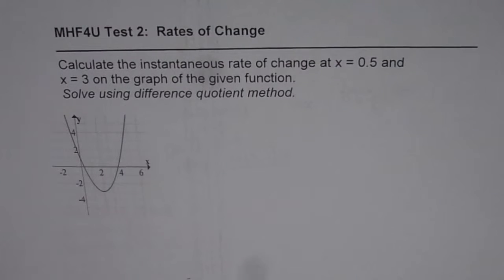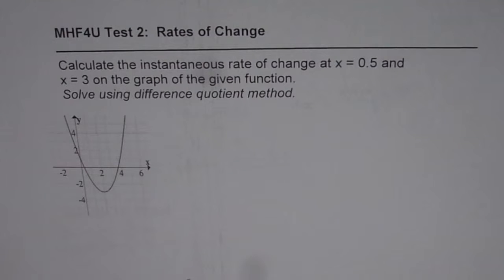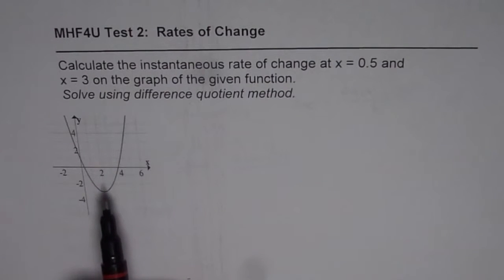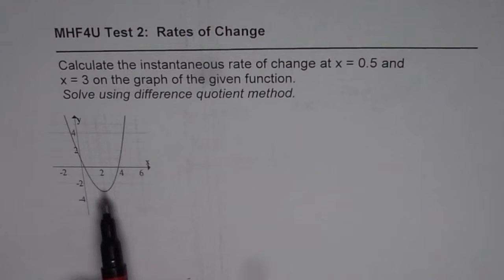I'm Anil Kumar and here is a very interesting question on rates of change. Calculate the instantaneous rate of change at x equals 0.5 and x equals 3 on the graph of the given function. Solve using the difference quotient method. We have done this question graphically in one of the videos and here we'll solve it algebraically.